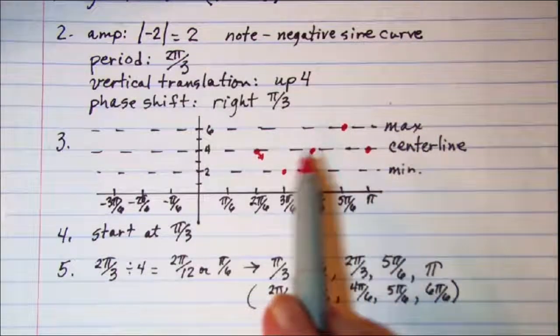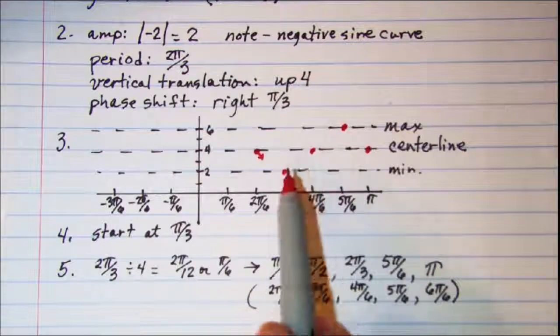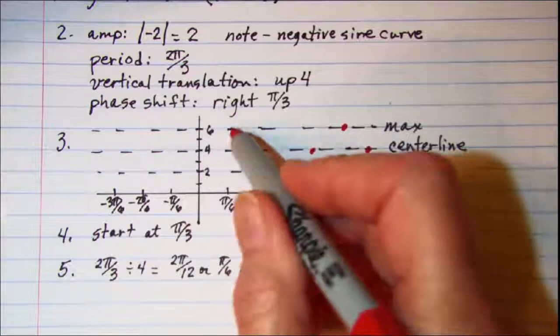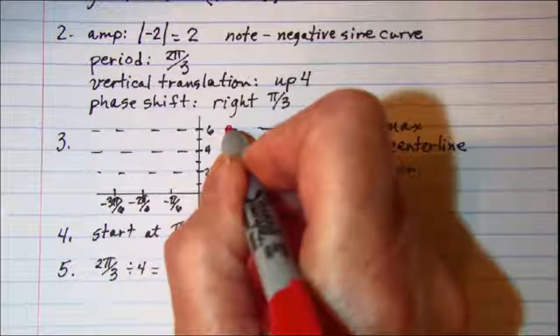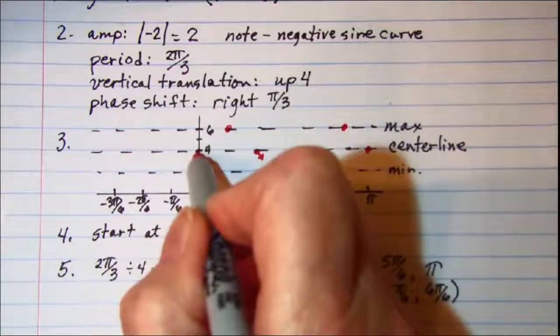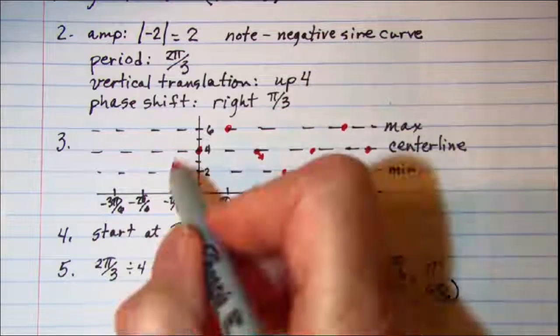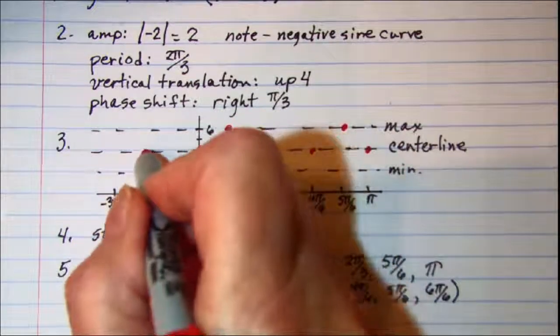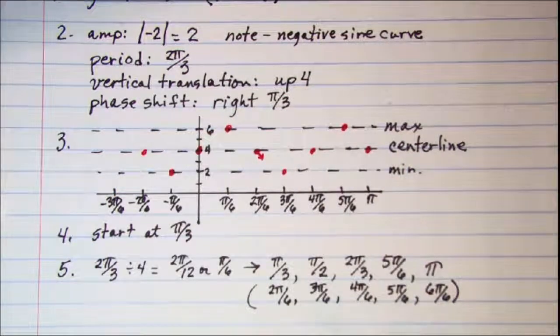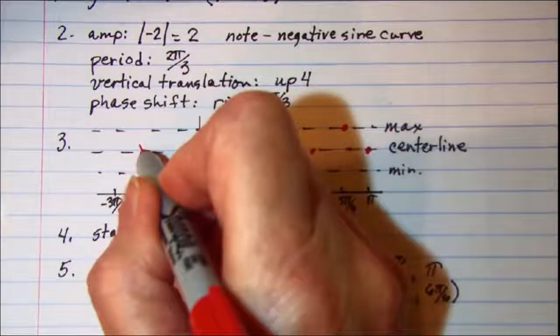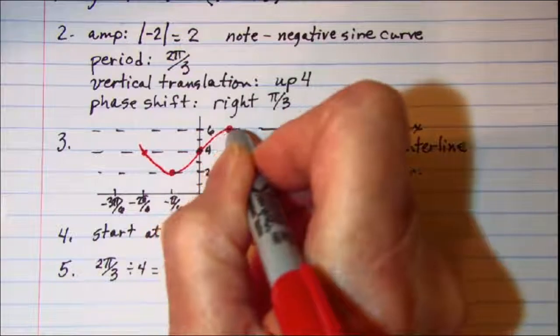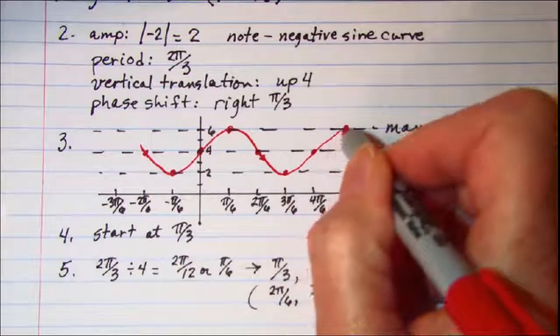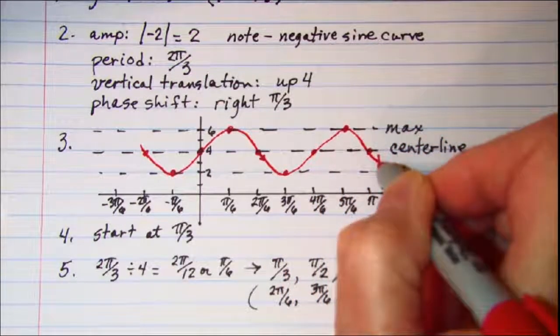Now I can continue to the left here so that I can have more than just the one period. If I head left I'll be at the maximum here at pi over 6, and then at the center line at 0, and then at the minimum at negative pi over 6, and then the center line at negative 2 pi over 6. So our curve looks like this.